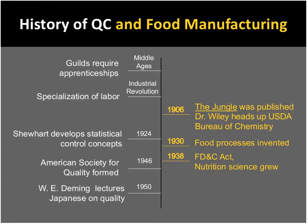Let's look at the timelines of where the history of food manufacturing fits in here. On the left side is the general timeline of quality management and quality control, and on the right-hand side, in yellow print, are the main events in the history of food manufacturing.